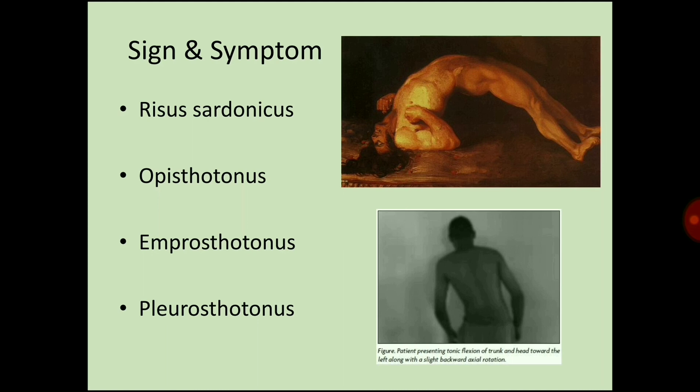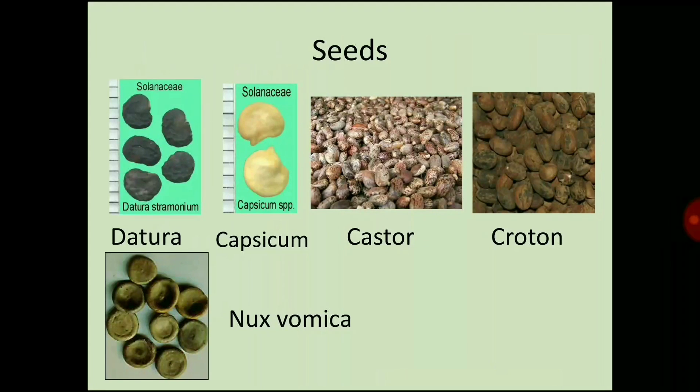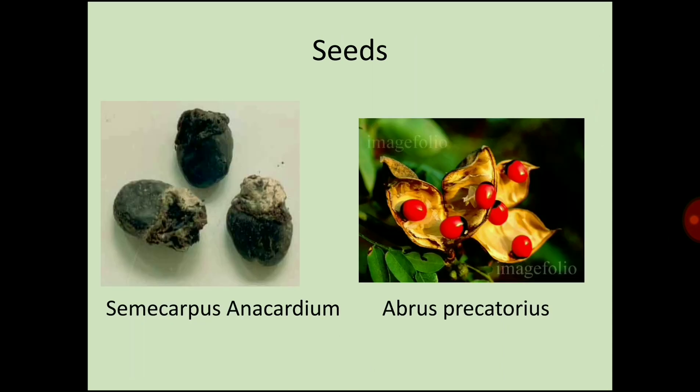Pleurosthotonos is a rare neurological disorder occurring due to prolonged exposure to antipsychotic drugs, characterized by dystonia and abnormal, sustained involuntary muscle contractions. The seeds covered include Datura seeds, capsicum seeds, castor seeds, croton seeds, semecarpus anacardium, and Abrus precatorius.